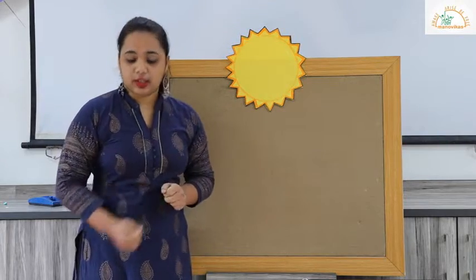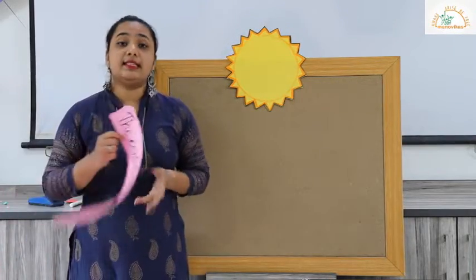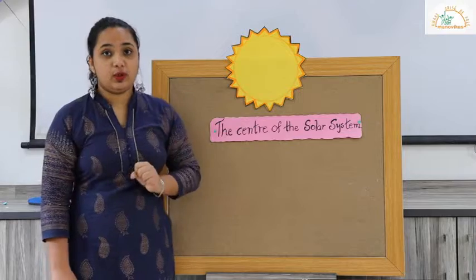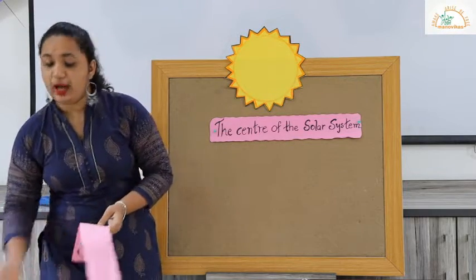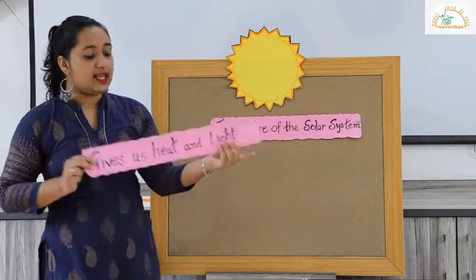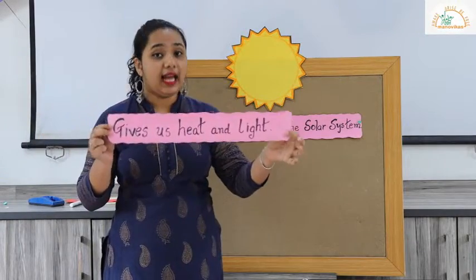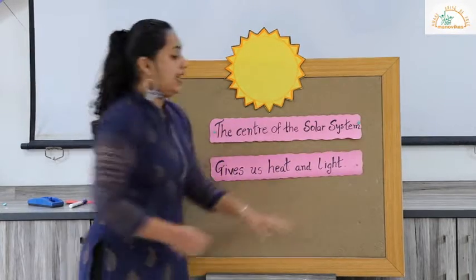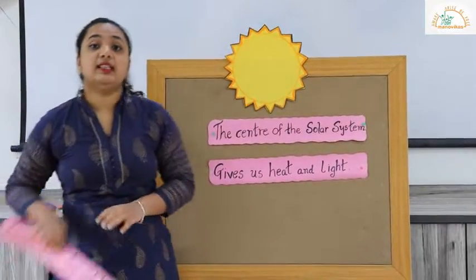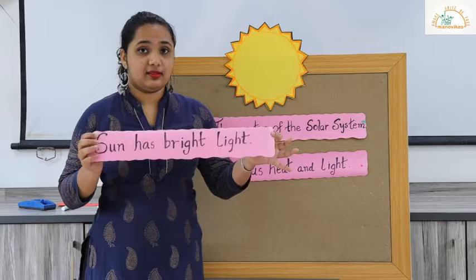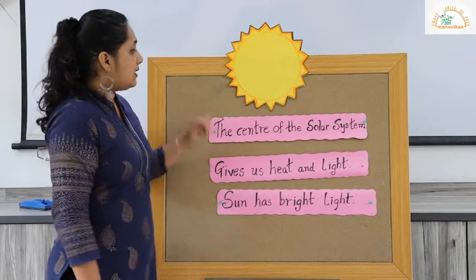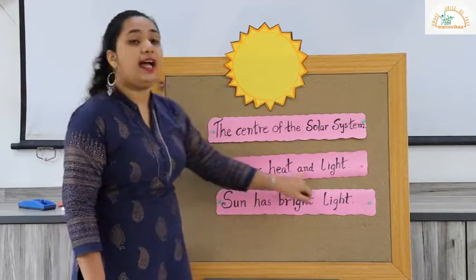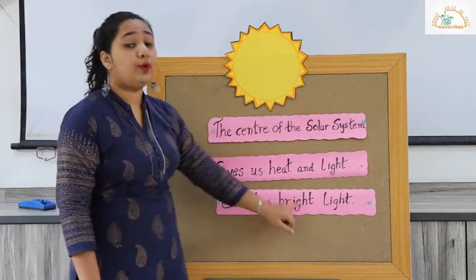In the first picture, you have seen that the sun is the center of the solar system. In the second picture, you have seen that the sun gives us heat and light, and plants need the sun's heat and light to grow. And in the third picture, the sun has bright light. Let us revise: the sun is the center of the solar system, it gives us heat and light, and the sun has bright light.